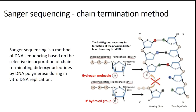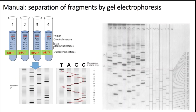In the lab, we use four different reactions. In all of them, we add the primer for the DNA we want to sequence, a DNA polymerase, and three deoxynucleotides — the regular ones: adenine, thymine, cytosine, and guanine. Then we add one dideoxynucleotide to each tube — thymine in one, adenine in another, guanine, and cytosine. The dideoxynucleotide concentration needs to be at least 100-fold lower than the regular nucleotides.